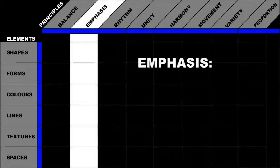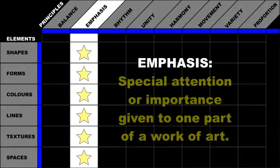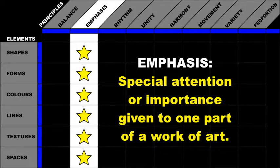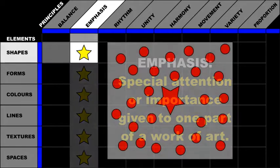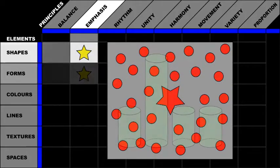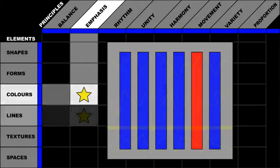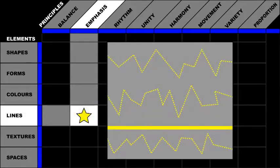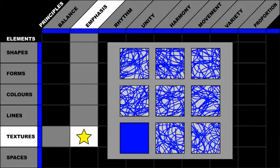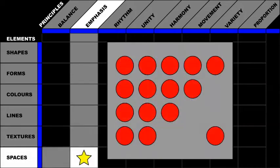Let's take a closer look at the principle of emphasis. Emphasis is achieved when special attention or importance is given to one part of a work of art. We can have emphasized shapes, forms, colors, lines, textures, and spaces.